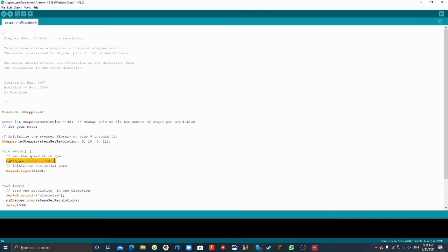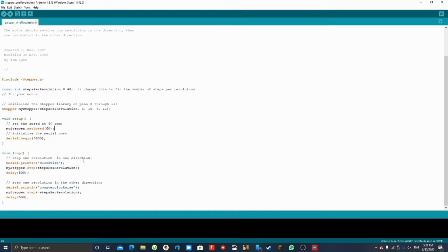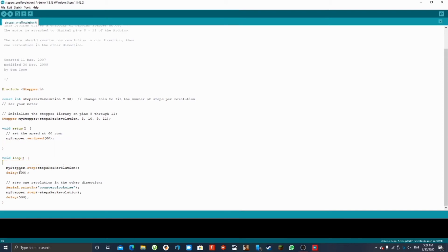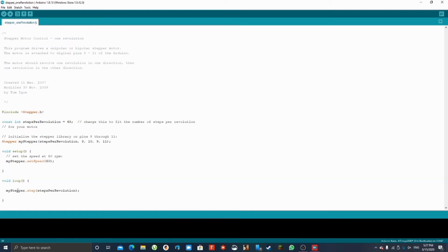Over here we will set the speed of the motor in RPMs. The default is 60 RPM. Delete the following code. We only need the line, my stepper dot step, steps per revolution in the loop.